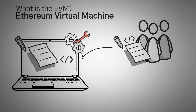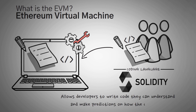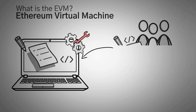Smart contract code, written by developers, is what the EVM processes. There are a few different EVM languages that developers write in. However, the most common one is Solidity. Solidity is a programming language that allows developers to write code that they can understand and make predictions on how the code will work. In reality, code can work in ways that we don't expect it to.